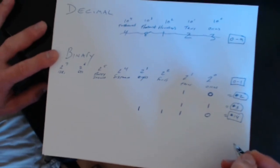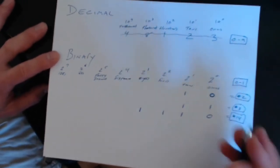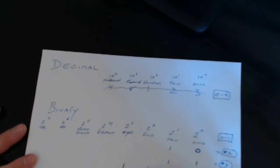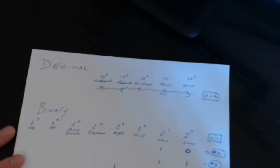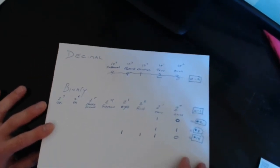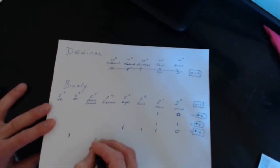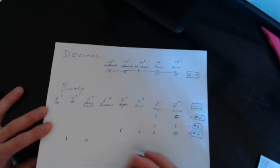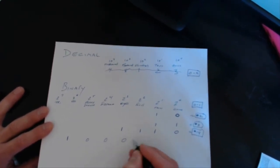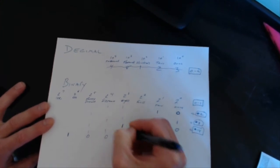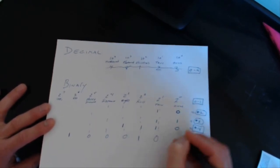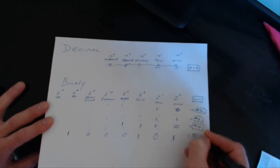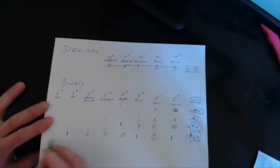That's how you count in binary. For one more example, let's write 69. We take one 64; 32 would take us over, 16 would take us over, 8 would take us over — so those get a 0. We need a 4 to get to 68, skip the 2, and then a 1 to reach 69. So 69 in binary is '1000101'.